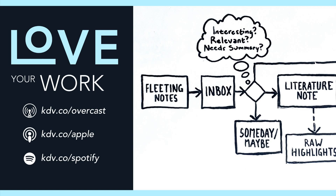The general structure of a Zettelkasten is fleeting notes, literature notes, and permanent notes. I also have three additional categories: inbox, someday maybe, and raw. Fleeting notes I take in my tiny Moleskine Volant or on the Drafts app or in any of my other paper notebooks. Literature notes are condensed notes I've made of an entire piece, such as an article or book. Permanent notes are single ideas, facts, or stories — this is the real slip box of the Zettelkasten, where I connect ideas to one another to sprout new ideas or build them into larger works.